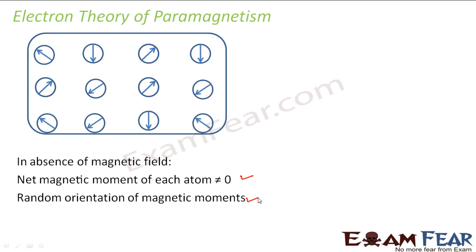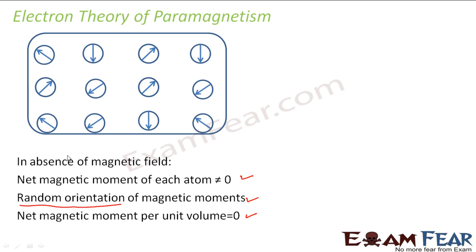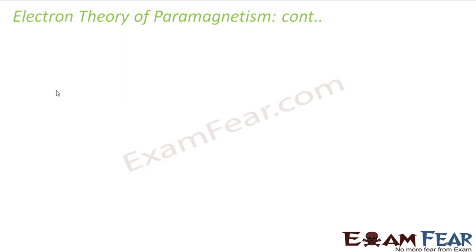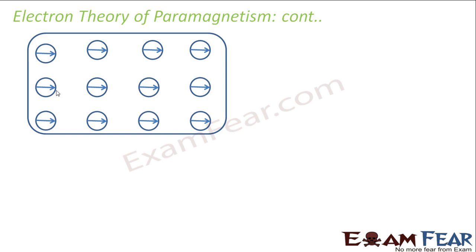Now what happens when we apply an external magnetic field? The net magnetic moment per unit volume is zero due to random orientation — if there is one magnetic moment in one direction, there is another in the opposite direction, so they cancel out. But when we apply an external magnetic field, all the magnetic moments start orienting along the applied field, and as a result the net magnetic moment per unit volume for the substance as a whole increases.